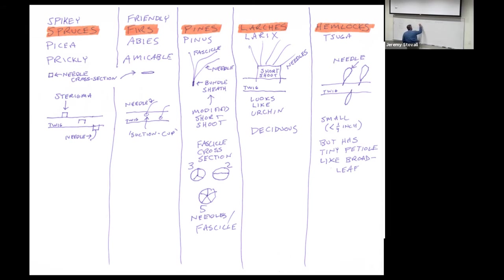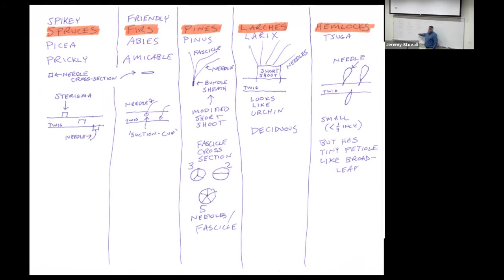Pines are in the genus Pinus, and their needles are borne in fascicles. They aren't borne singly — except Pinus monophylla with one needle per fascicle — and we've seen mostly three needles per fascicle in our southern pines. The fascicle is actually a modified short shoot, almost like a tiny twig holding those three leaves together. If a pine has three needles per fascicle, you can stick them back together and they'll be completely round in cross-section.